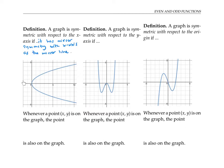This graph here is an example. Here is the mirror line. Notice that the point (5, 3) is on this graph, and so its mirror image (5, -3) is also on the graph. Similarly, the point (2, 2) is on the graph, and its mirror image (2, -2) is on the graph.